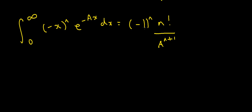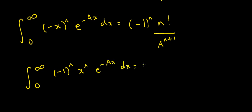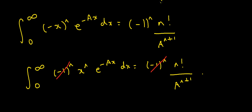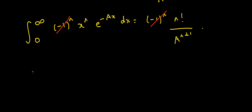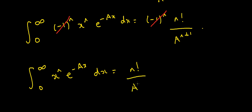Looking closely, there's a factor of minus 1 to the power n on both sides. Writing the left-hand side as minus 1 to the n times the integral from 0 to infinity of x to the power n, e to the minus ax dx, equal to minus 1 to the n times n factorial divided by a to the n plus 1. Since minus 1 to the n appears on both sides, we can cancel it, leaving the integral from 0 to infinity of x to the power n, e to the minus ax dx equals n factorial divided by a to the power n plus 1.